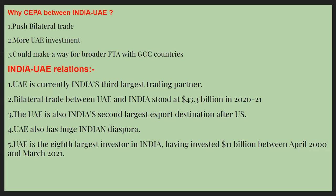Now talking about why CEPA has been made between India and UAE. The first reason is to push bilateral trade. Bilateral trade is an agreement between two countries to promote trade and commerce by eliminating trade barriers such as tariffs, import quotas, and export restraints in order to encourage trade and investment. The main advantage is the expansion of the market for a country's goods through concerted negotiation between two countries.